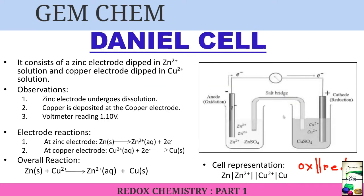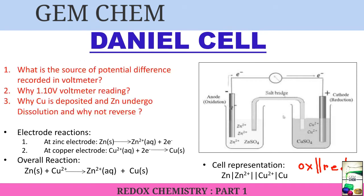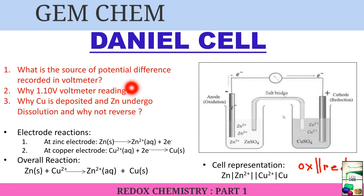From this, three questions arise. First, what is the source of the potential difference recorded in the voltmeter? Second, why does the voltmeter show specifically 1.10 volts? Third, why is copper deposited and zinc undergoes dissolution, and not the reverse? These three questions will be answered later in the video, but first we need to understand a few basic concepts.